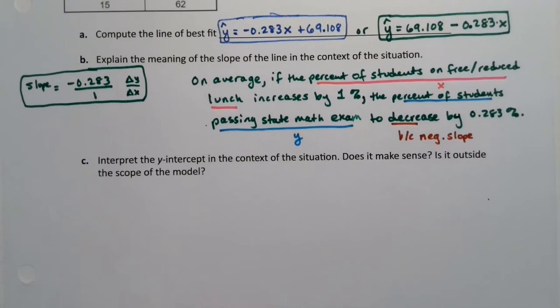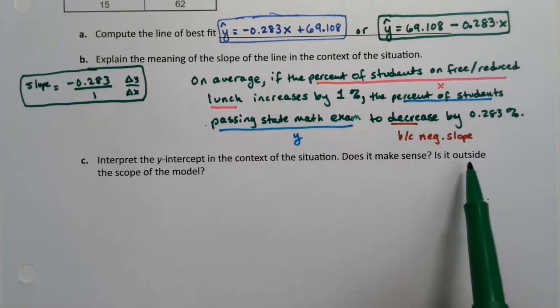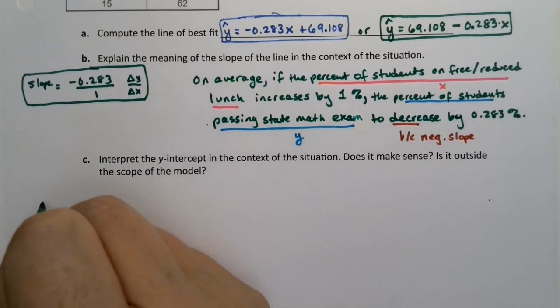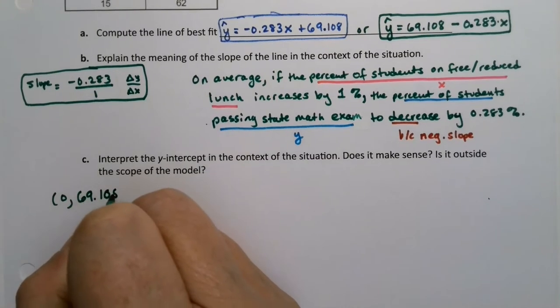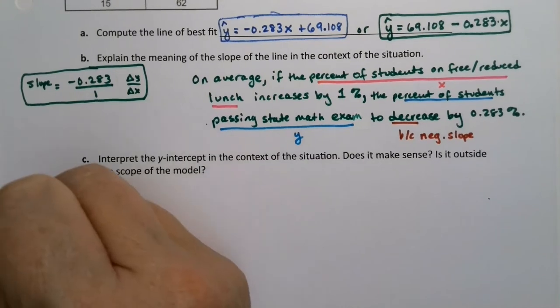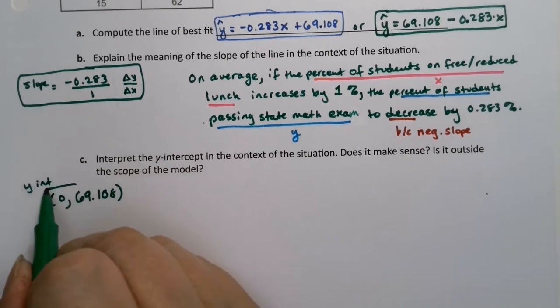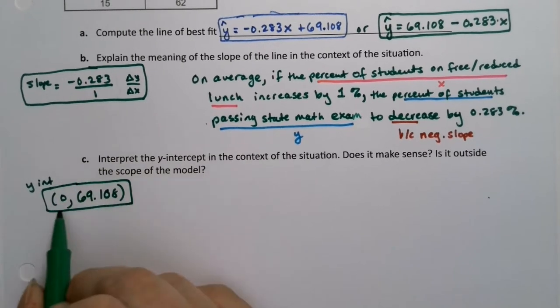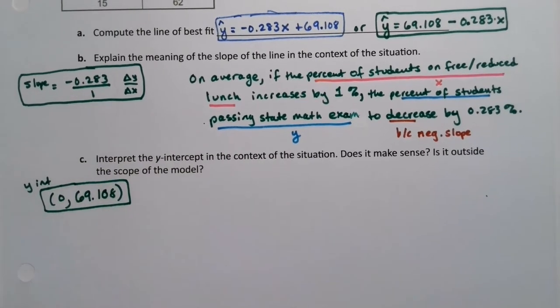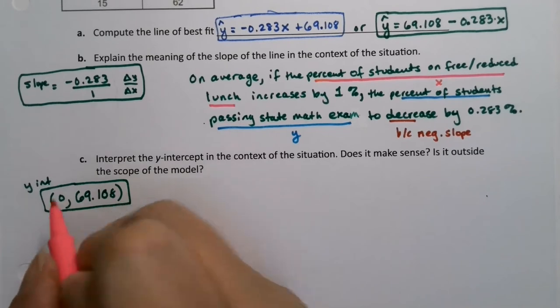Now what about the y-intercept, and does it make sense? So the y-intercept would be 0 comma, and then the constant, 69.108. That's the y-intercept. It's not just the 69.108, it's a point, 0 comma. So it's x and y.